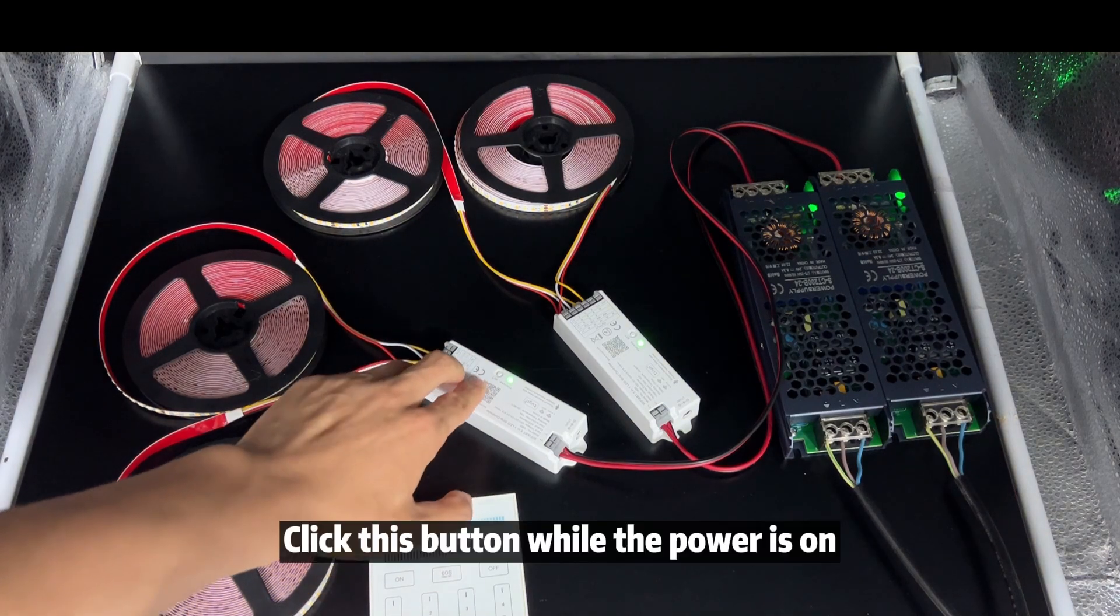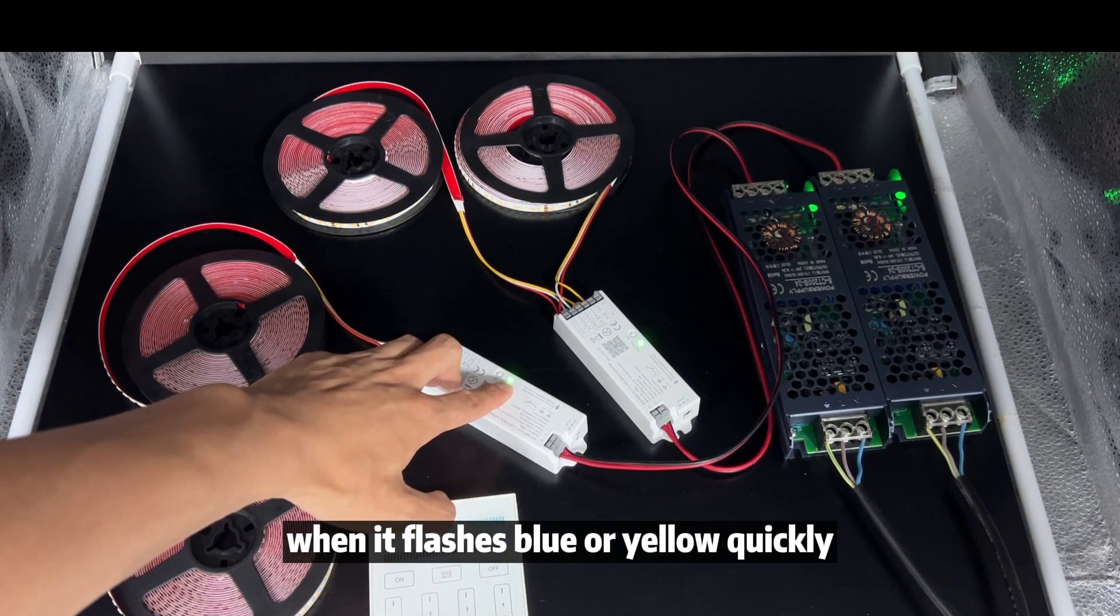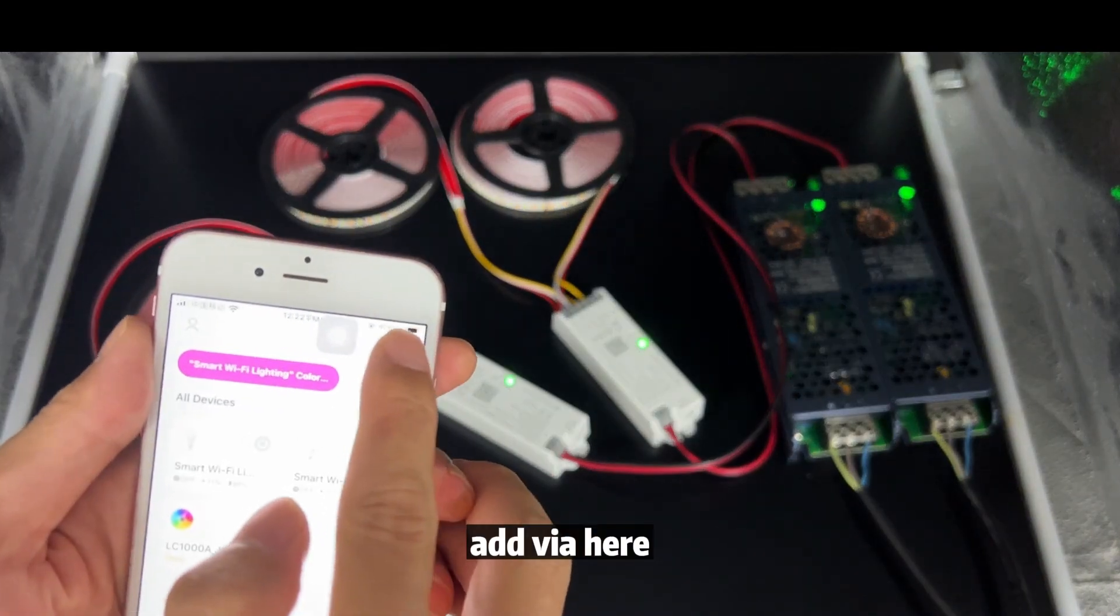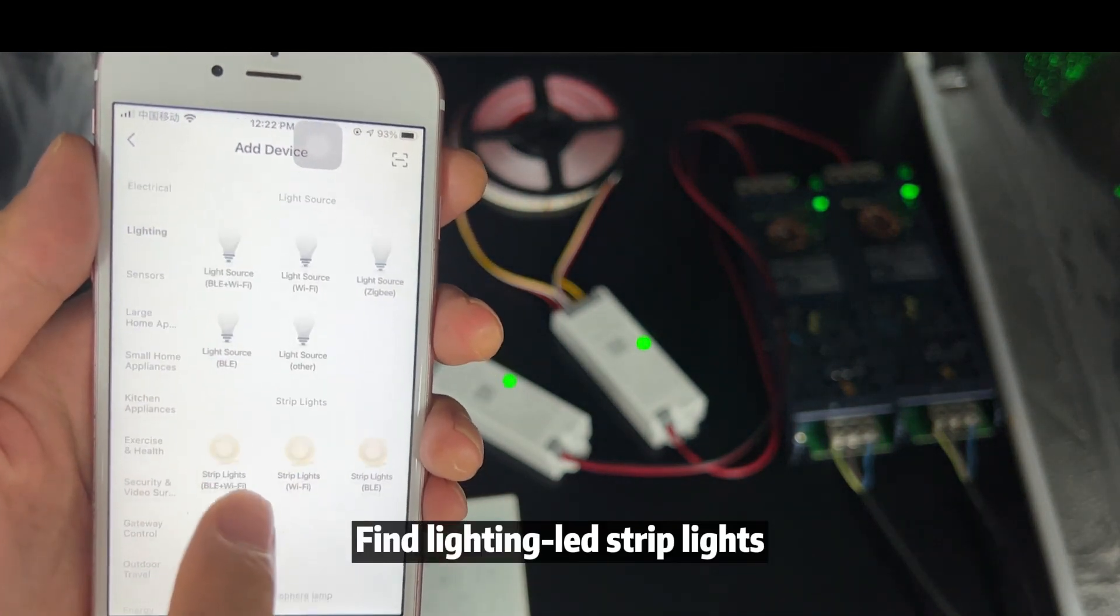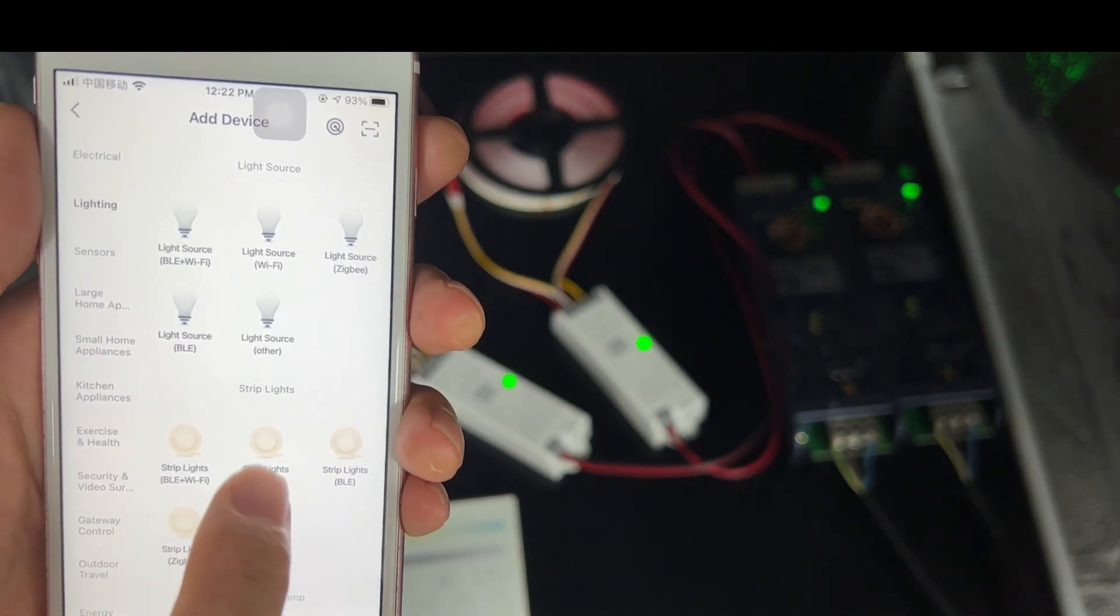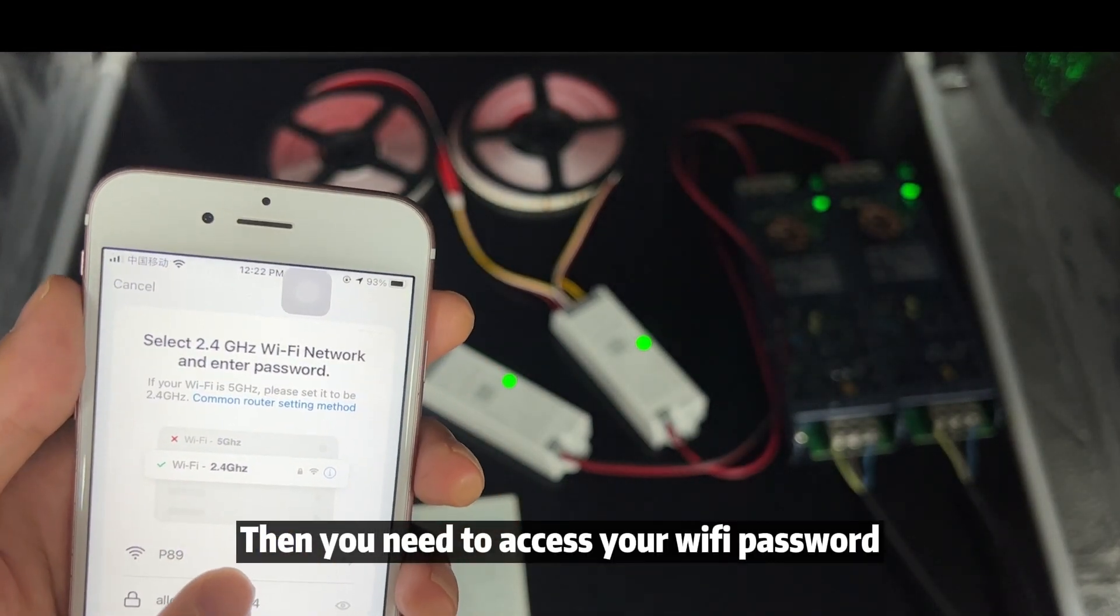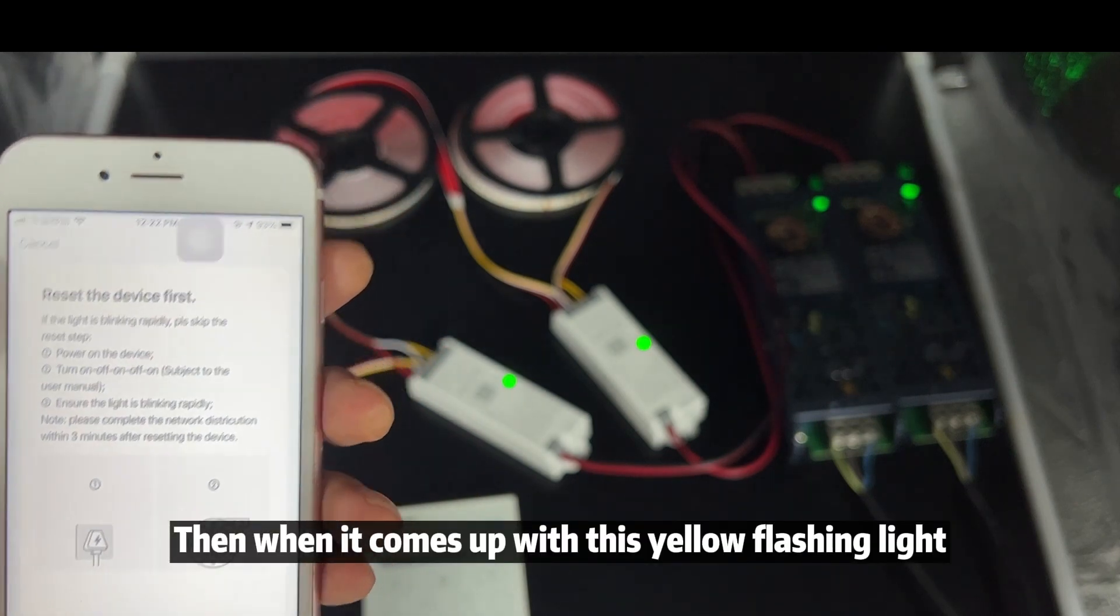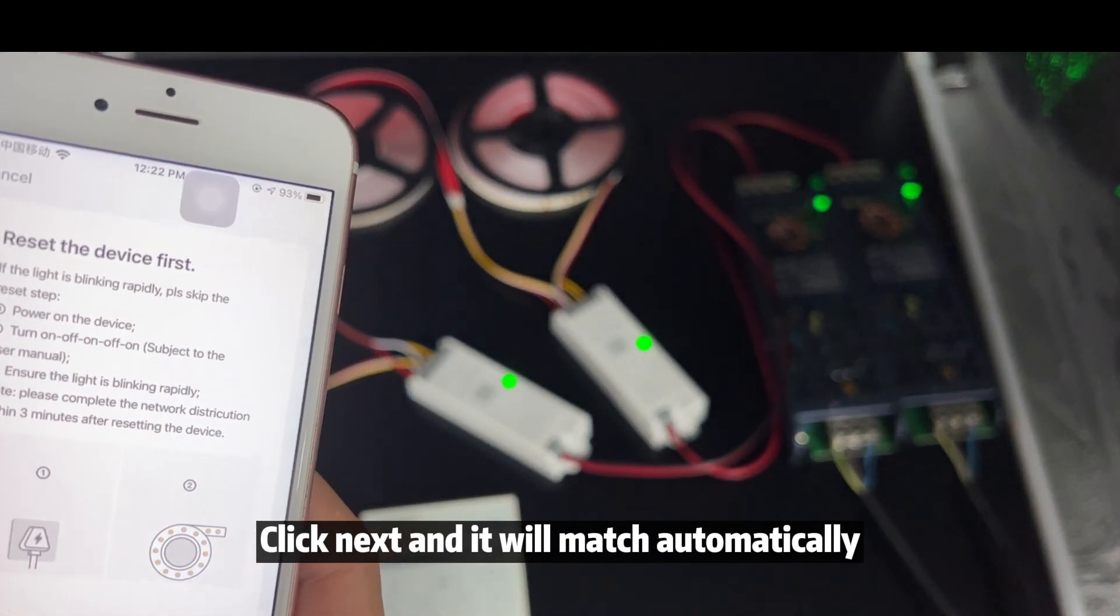How to match this controller through app. Click this button while the power is on. When it flashes blue or yellow quickly, add a device here. Find lighting LED strip lights. Click here. Then you need to access your Wi-Fi password, router password. Then when it comes up with this yellow flashing light, click next and it will match automatically.